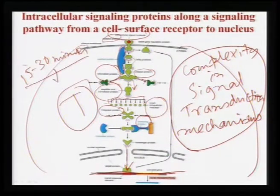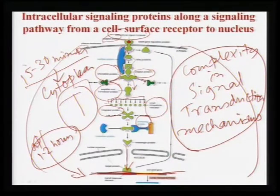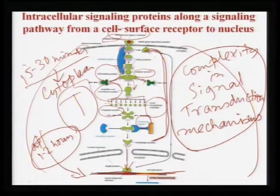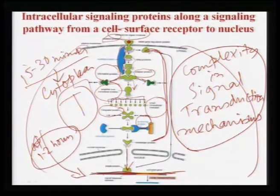If the signal has to go inside the nucleus, it takes 1 to 2 hours. This entire cascade — in biological language, called signaling cascade — takes 15 to 30 minutes if it changes the metabolic or cytoplasmic activity of the cell, but if it has to change gene expression, then it takes 1 to 2 hours. This entire slide shows how complex this cell signaling process can be in general.